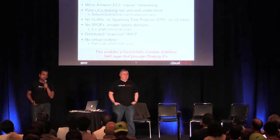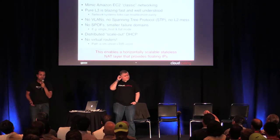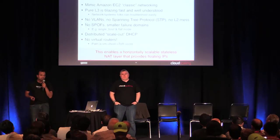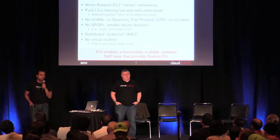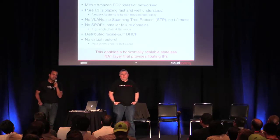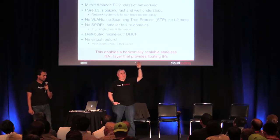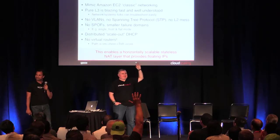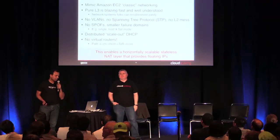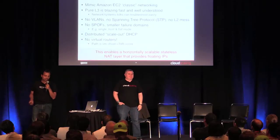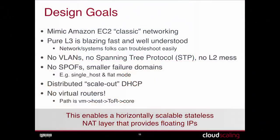We did not want VLANs because we did not want to run into scaling issues. We did not want to run STP — spanning tree protocol — because STP requires a single interface to be on and be the primary to eliminate routing loops, and that kind of kills HA. We did not want any single points of failure in the network, which rules out single host and flat mode in Nova Network. We wanted distributed DHCP at scale for all VMs and no virtual routers in the packet path.